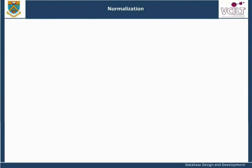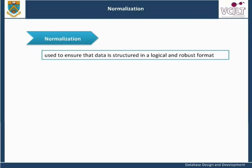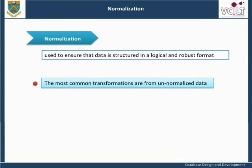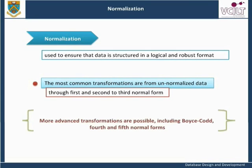When a database solution to a problem is required, normalization is the process used to ensure that data is structured in a logical and robust format. The most common transformations are from unnormalized data through first and second to third normal form. More advanced transformations are possible, including Boyce-Codd, fourth, and fifth normal forms. If we consider the data before it has undergone the normalization process, we can regard it as unnormalized.